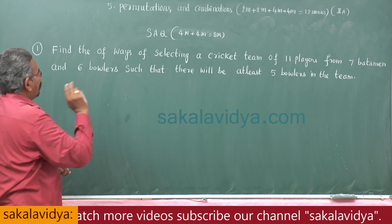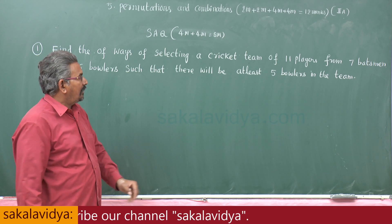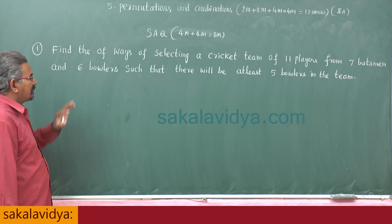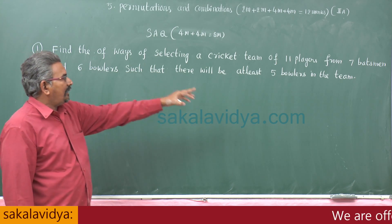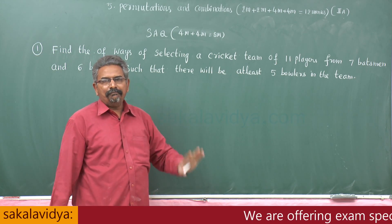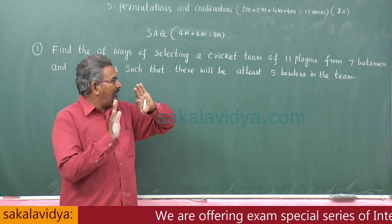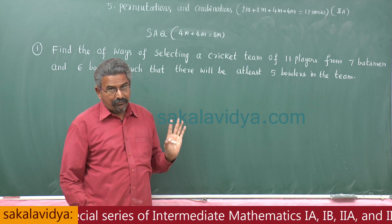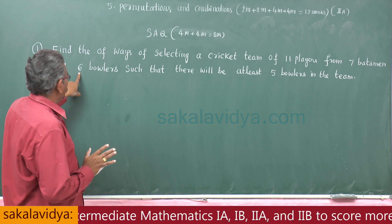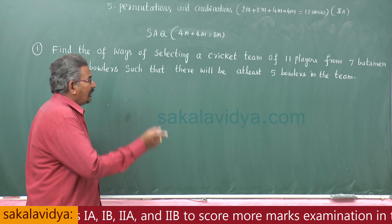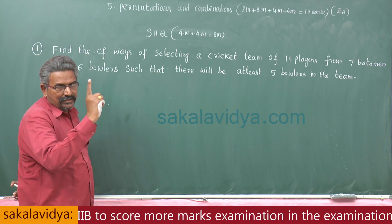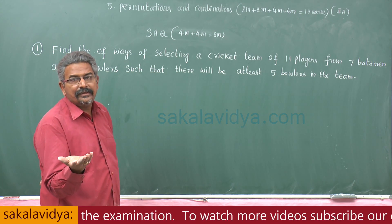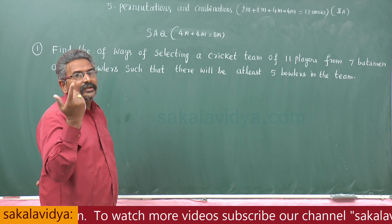Find the number of ways of selecting a cricket team of 11 players from 7 batsmen and 6 bowlers, such that there will be at least 5 bowlers in the team. Compulsory, there must be 5 bowlers or more than 5 bowlers. But how many bowlers are available? Just 6. That means only 2 combinations we get.